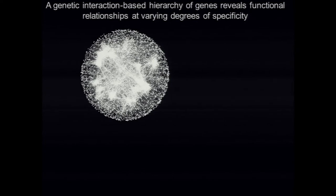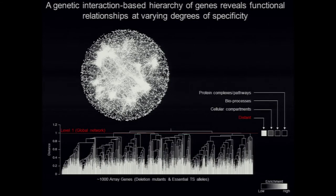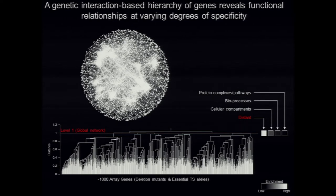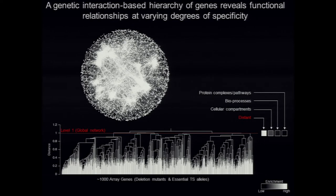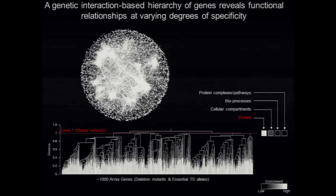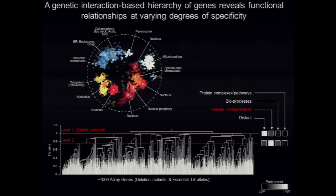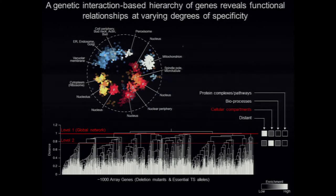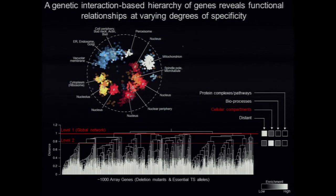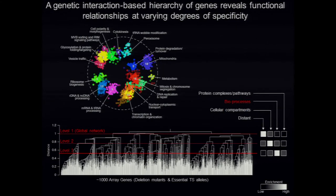You can also display these data as a dendrogram because we have measurements for the degree of interaction between each gene, and you can look at the dendrogram at various levels. At level one, we're simply looking at the whole network of correlated genetic interaction profiles. At level two in this hierarchy, we start to define sub-compartments in the cells — the nucleolus, the cytoplasm, vacuolar membrane, endosome, etc.